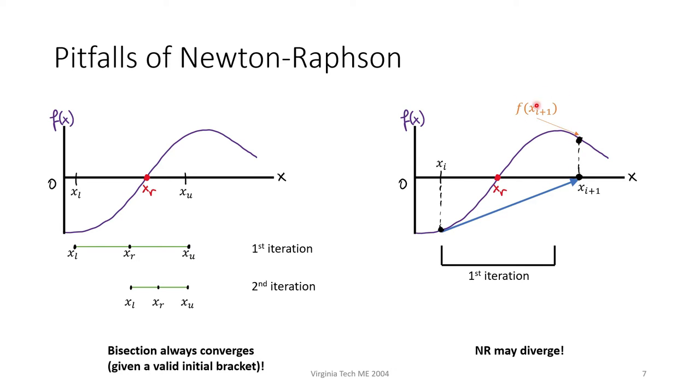Based on f of x sub i plus 1, this obviously isn't the true root, so we construct the next tangent to this point and ride that all the way down. But we're clearly heading away from the real root, and we will probably continue to do so with every iteration.